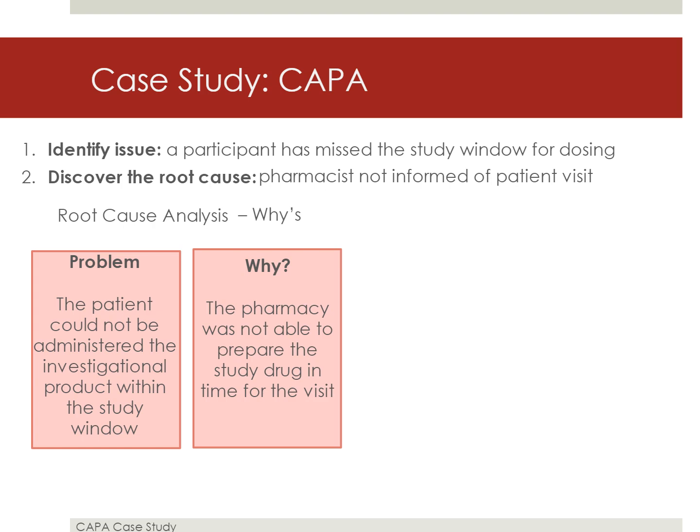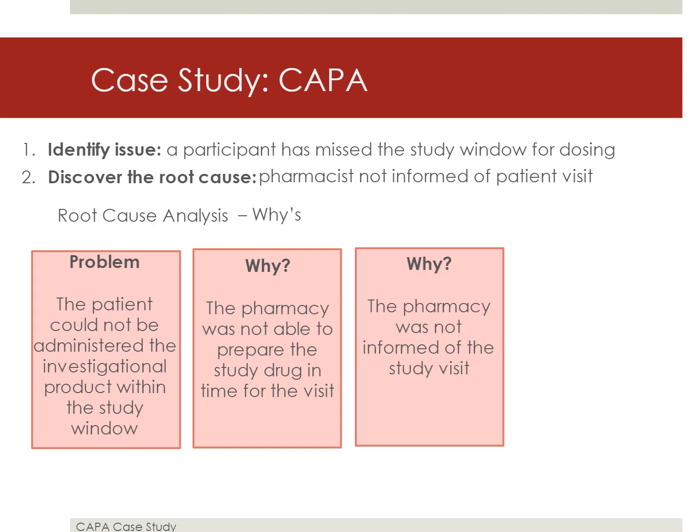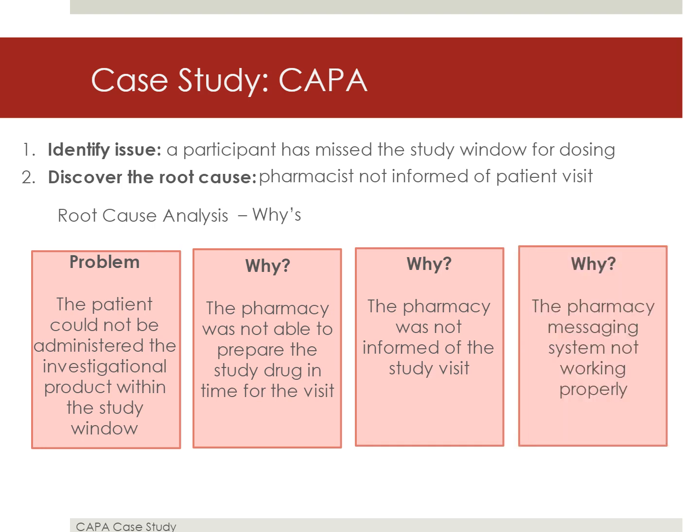The study team must then think about why the pharmacy could not prepare the drug on time. It was because the pharmacy was not informed of the study visit. The study team must then ask why not. It was because the pharmacy messaging system was not working properly. Consequently, the participant had to return the following day to receive the investigational product, which was outside of the dosing window as specified in the protocol.